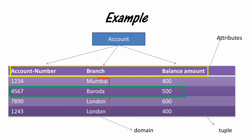A row is called a tuple. The next thing we can see is a column, which is called a domain. It is called a domain because it represents only a single type of data. The branch column will have only branch names, and the account number column will have only numerical values. Similarly, the balance amount column contains a single type of data.